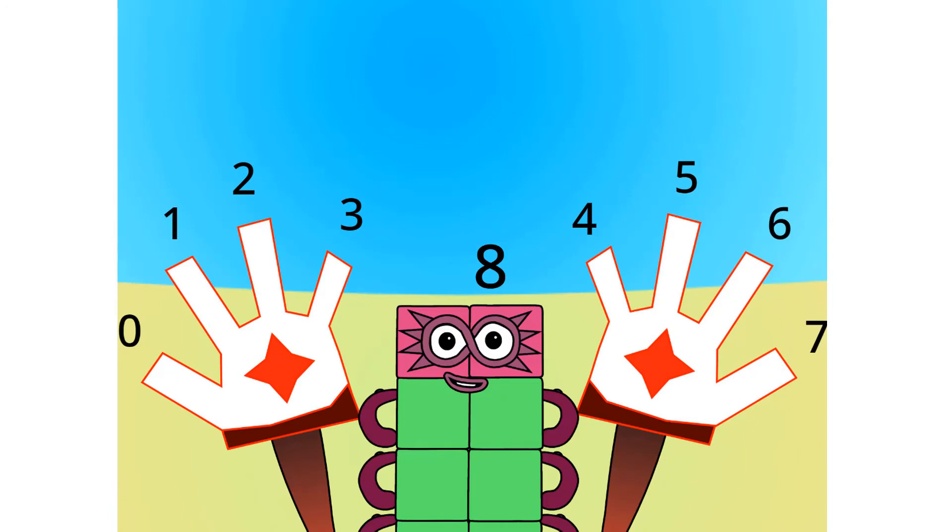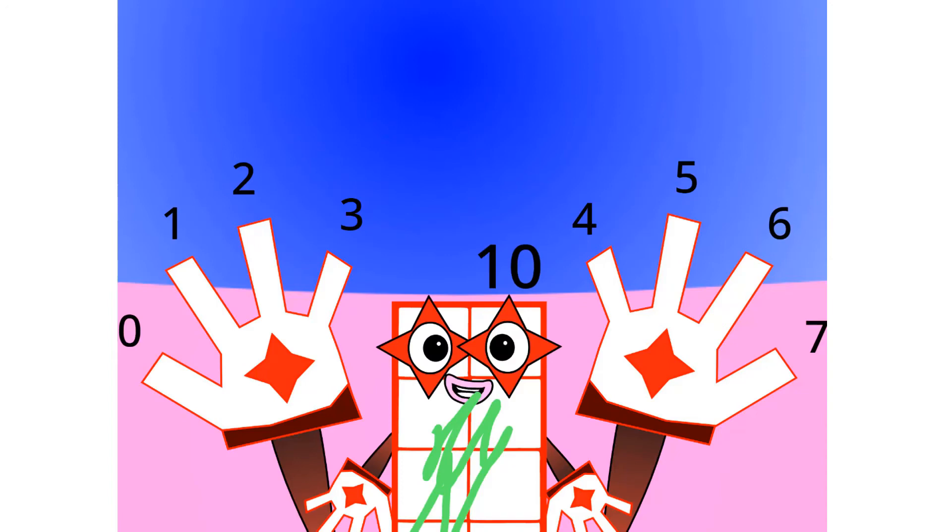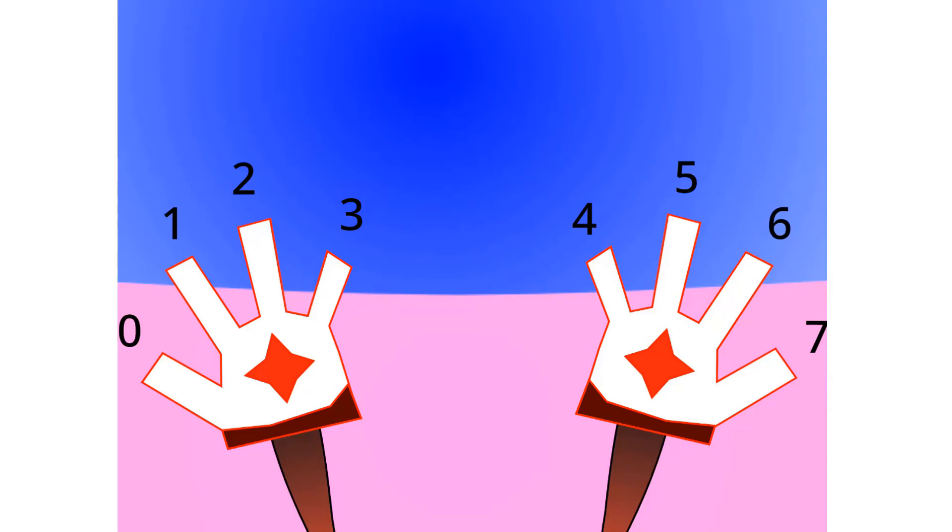As you can see, cartoon characters, like Mickey Mouse, have 4 fingers on each hand. And we call this base 8, or octal. Oh wow, looks like I am no longer octoblock, but I am still called 8. So yeah, this base has 8 digits.